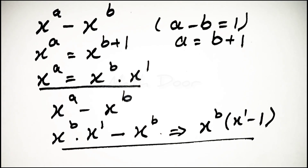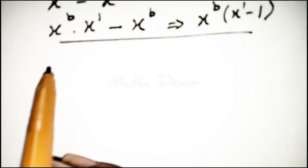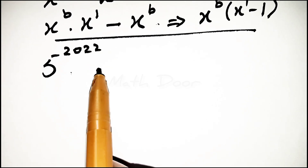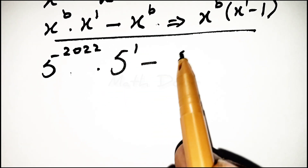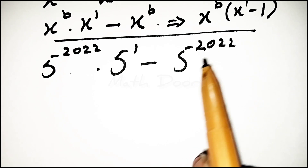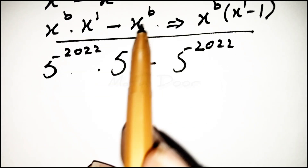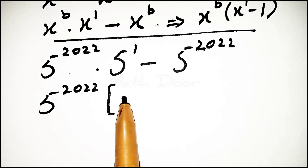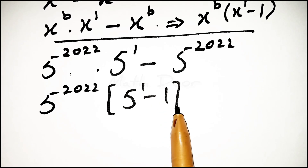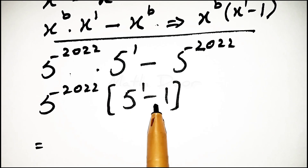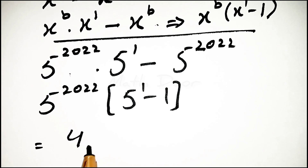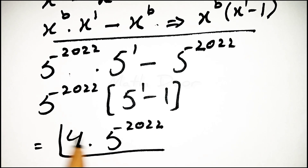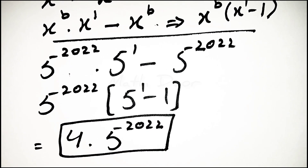Now we apply this rule to our question: 5 power 2022 dot 5 power 1 minus 5 power 2022. We take 5 power 2022 as a common, giving 5 power 2022 times (5 power 1 minus 1). Since 5 power 1 minus 1 equals 4, our final answer is 4 dot 5 power 2022.